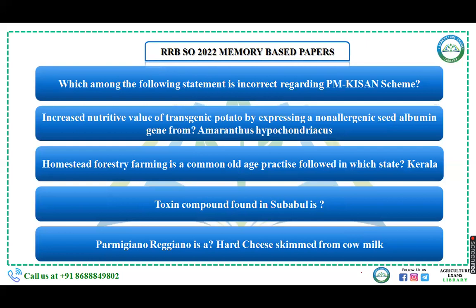Which of the following statements is correct regarding the PM Kisan scheme? It is an income support scheme for farmers; only those farmers who have land are eligible, and they receive six thousand rupees in three installments of two thousand rupees each. Another question: increased nutritive value of transgenic potato by expressing a non-allergic seed albumin gene — from where was the gene taken? The answer is Amaranthus hypochondricus.